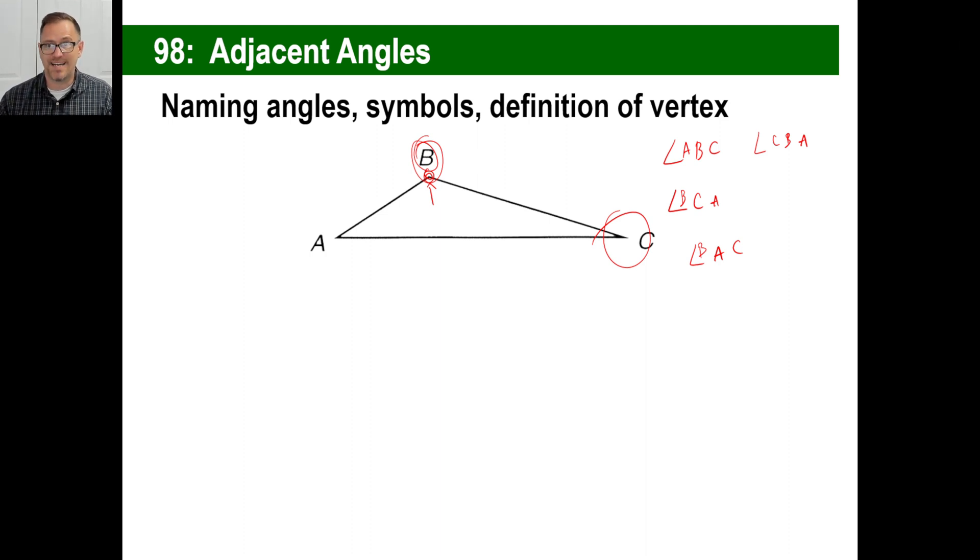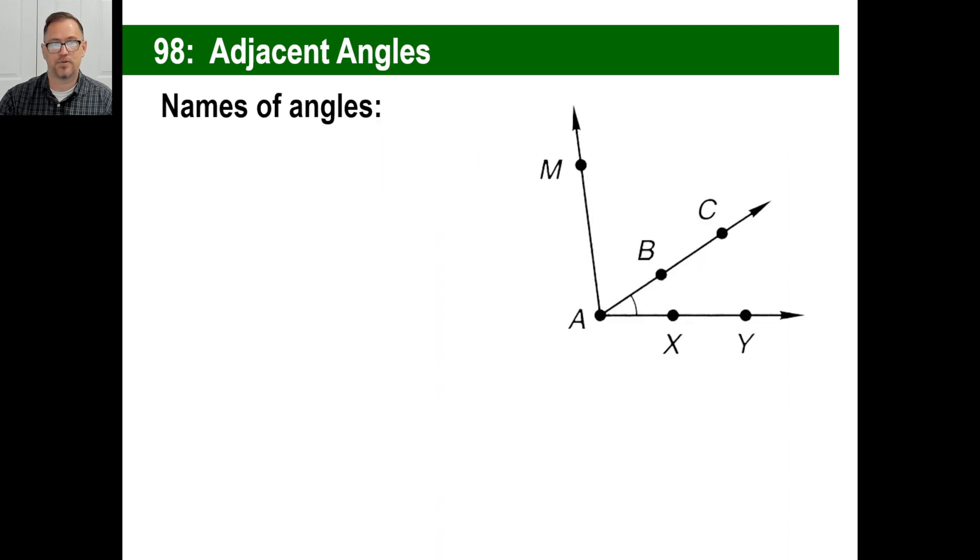And that's how a vertex is basically, this is a vertex. This is the middle part of this angle. Now the plural of vertex, this goes back to Latin, is vertices, not vertexes. It's vertices. V-E-R-T-I-C-E-S. That's third declension feminine Latin, if you're a Latin person.